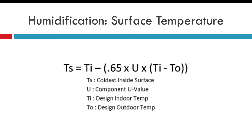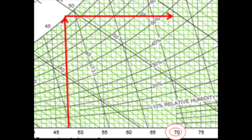Here's the equation. You need to know the component U value — in this case the window — the design indoor temperature of 70 degrees, and the design outdoor temperature of zero. Do the math within parentheses first: temperature inside minus temperature outside. Then multiply the constant of 0.65 by the U value by that temperature difference, and subtract the result from your design indoor temperature. That gives you the coldest inside surface temperature. When you run the numbers, the surface temperature of the window at design conditions is 48 degrees. Cross-referencing 48°F on the psychrometric chart, the maximum relative humidity before reaching the dew point of the air is 45%.